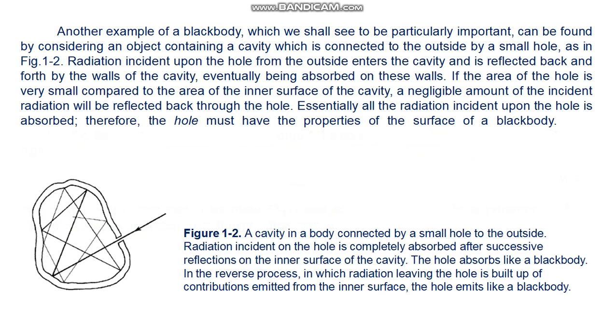Another example of a black body, which we shall see is particularly important, can be found by considering an object containing a cavity which is connected to the outside by a small hole, as in figure 1.2. Radiation incident upon the hole from the outside enters the cavity and is reflected back and forth by the walls of the cavity. If the area of the hole is very small compared to the area of the inner surface of the cavity, a negligible amount of the incident radiation will be reflected back through the hole. Essentially all of the radiation incident upon the hole is absorbed. Therefore, the hole must have the properties of the surface of a black body. Most black bodies used in laboratory experiments are constructed along these lines.